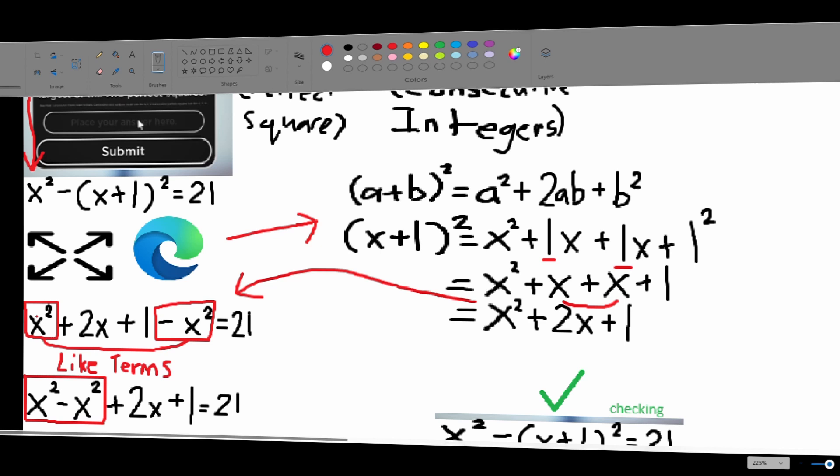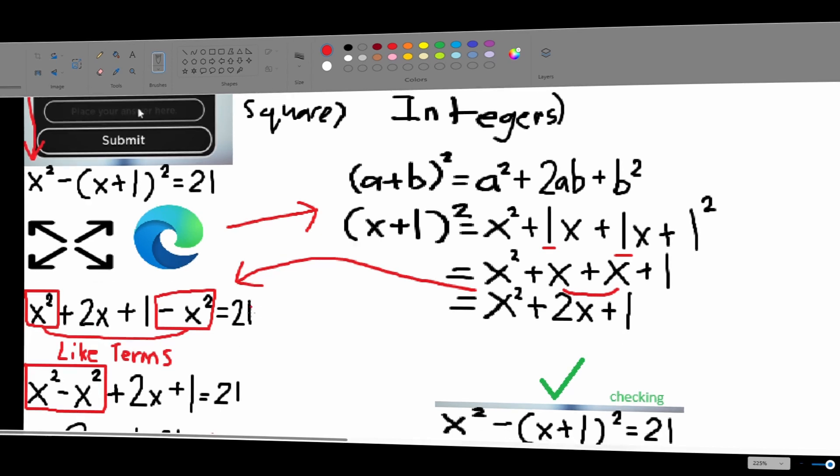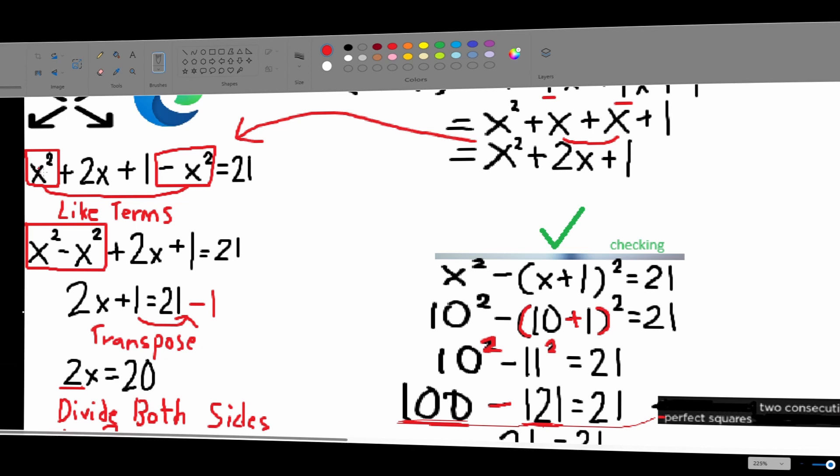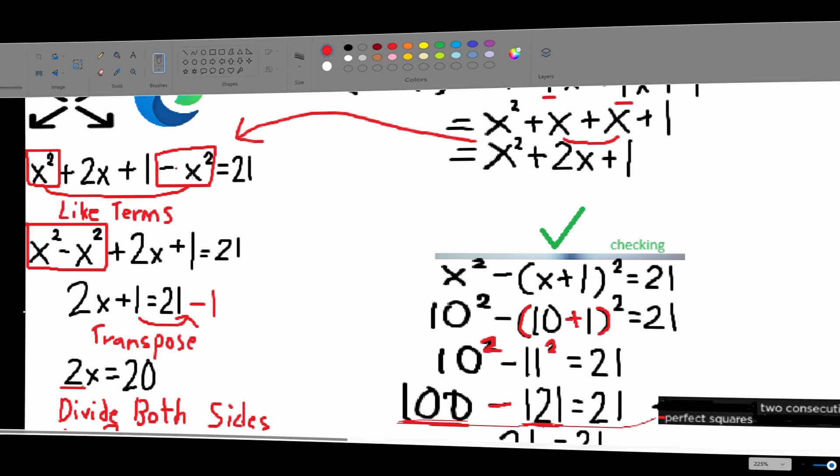So, now we can go here again and plug in our equation we got from squaring the binomial. So, now we've got x squared plus 2x plus 1 minus x squared equals 21. And because these are like terms, we can simply move them here.